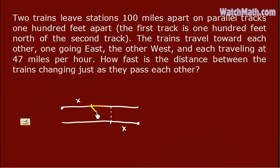Now, let us denote the distance between the two trains as z. And we know this is 100 feet. Since the distance between the two stations is 100 miles, and this is x and also that one is x, then this is 100 minus x minus x, which is 100 minus 2x.